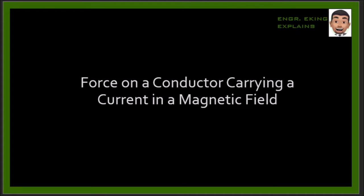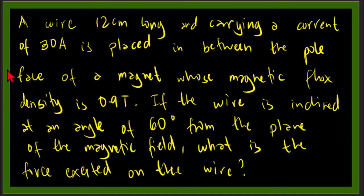In this video we will be solving another problem involving force on a conductor carrying a current in a magnetic field. We have a wire 12 cm long and carrying a current of 30 amperes, placed in between the pole face of a magnet.